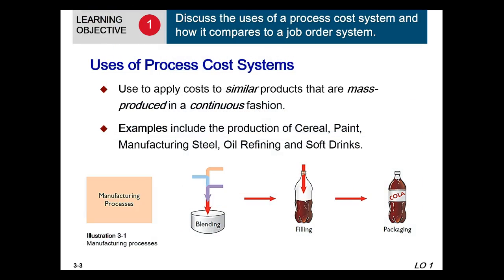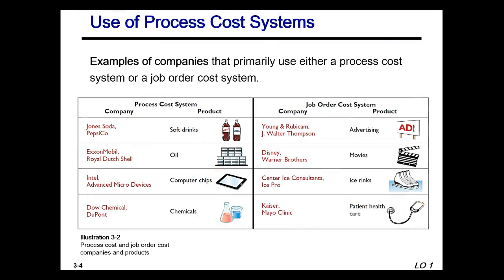The process cost system is utilized when we are manufacturing very similar products that are mass-produced. Examples could be cereal, paint, manufacturing steel. One that hits real close to home here in Minnesota is oil refining such as the Coke refining and Marathon Oil companies, along with soft drinks. In the process cost system, the process is continual manufacturing of a similar product. Examples include Pepsi, Jones Soda, Exxon or Royal Dutch for oil, Intel for computer chips, and Dow Company for chemicals.